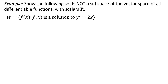What we want to show is that one or both of those properties in the subspace theorem fail, since the problem told us the set is not a subspace. I've got two properties to consider: additive closure and scalar multiplication closure.